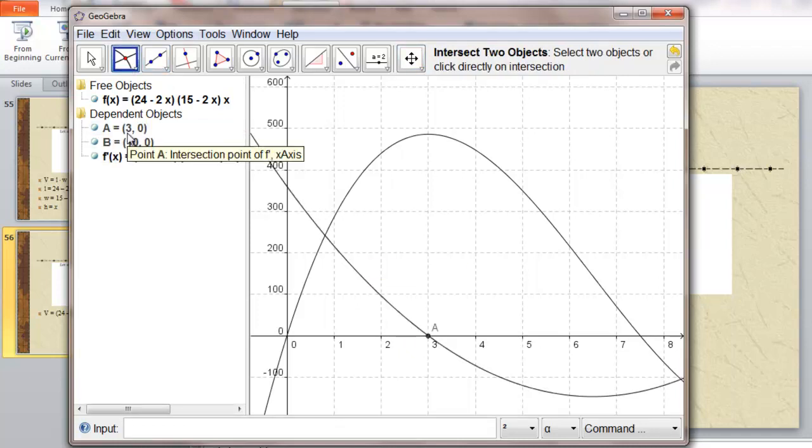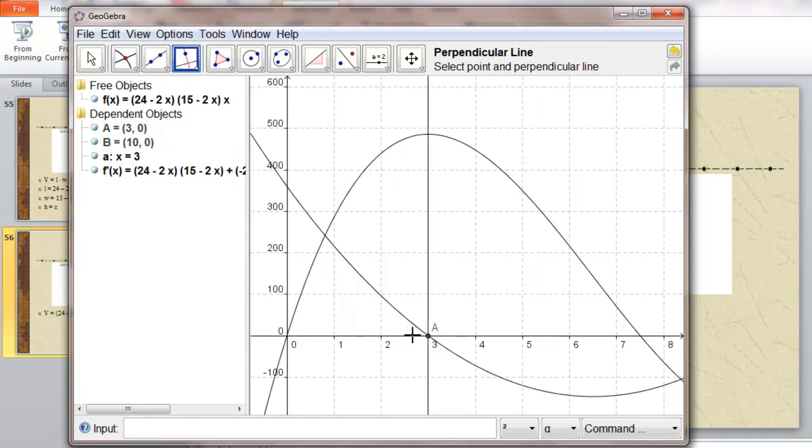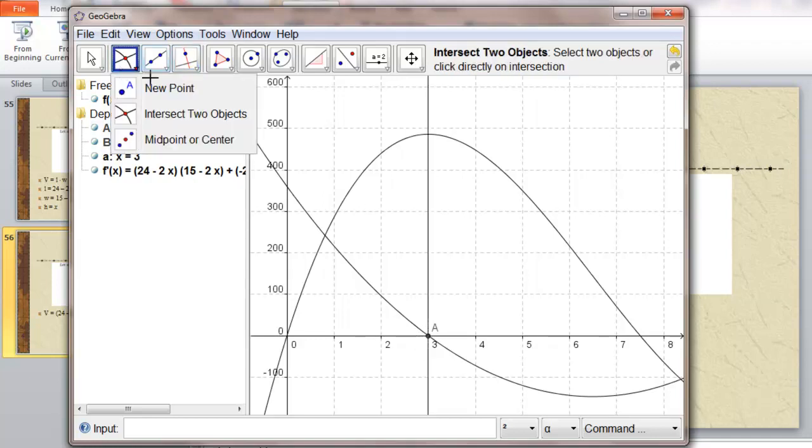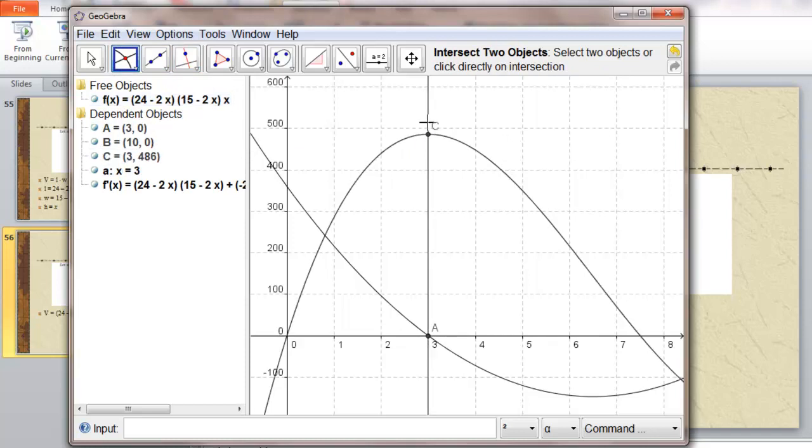Point A is at x is 3. We cut out a 3x3 square. What's the volume at that point? 486 cubic inches.